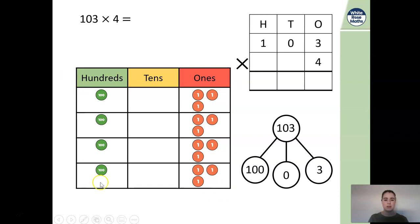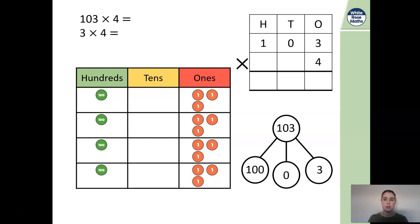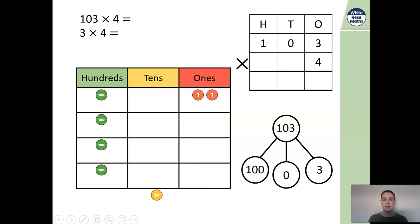Here we have our place value counters which set up 100 and three ones. There are no tens in here, so we need to remember this. Partitioning into ones, tens and hundreds: we have three ones, zero tens, and one hundred. Now that we've got this, we can work out our questions. The first thing we're going to do is three multiplied by four. We have too many ones so we need to exchange them into our tens column. The answer here is 12, so we have two ones in our ones column and one additional ten that we've carried over to our tens column.